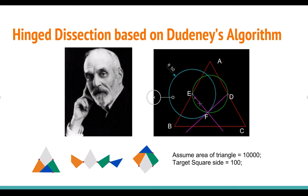Therefore, we'll have a target square with the same area, and that will require the square has side 100. So how do we do that? First, we find point E and D, which is the midway point of AB and AC.